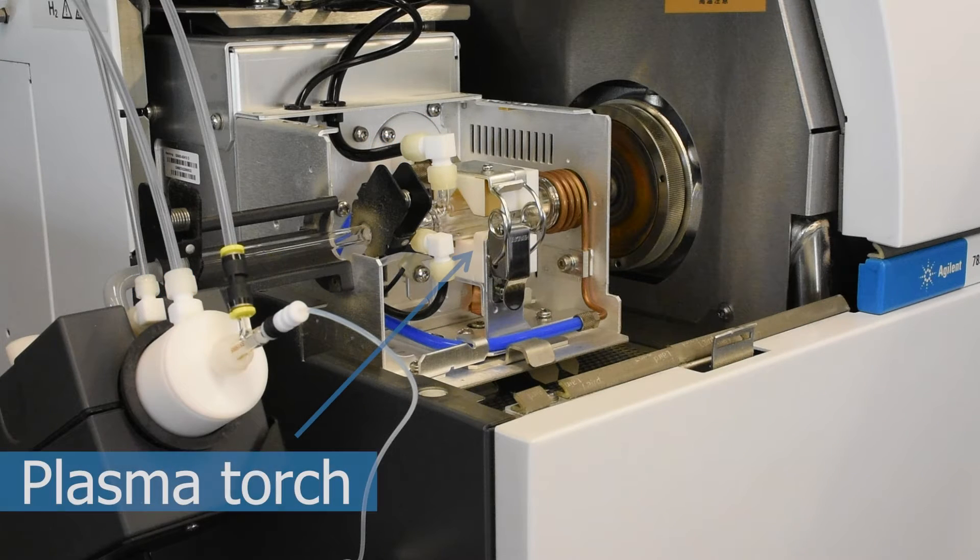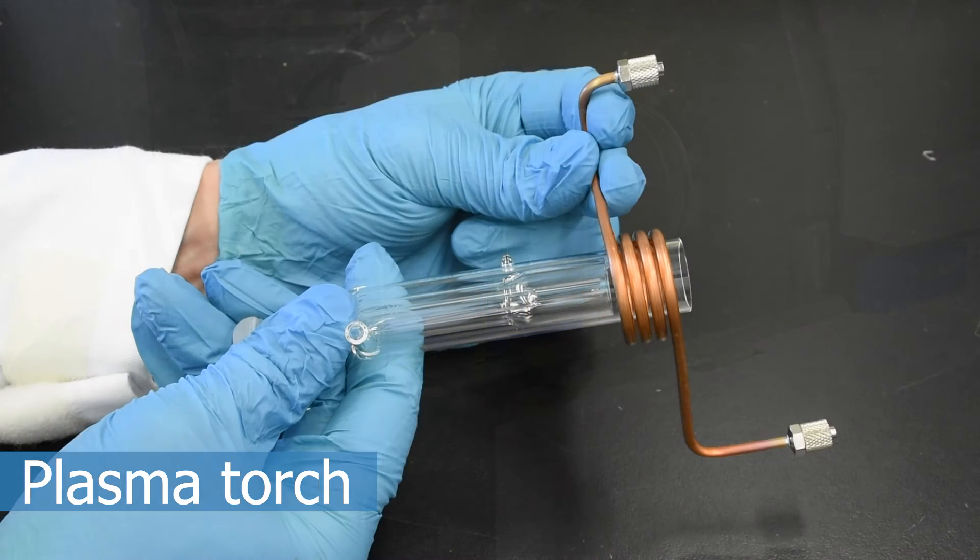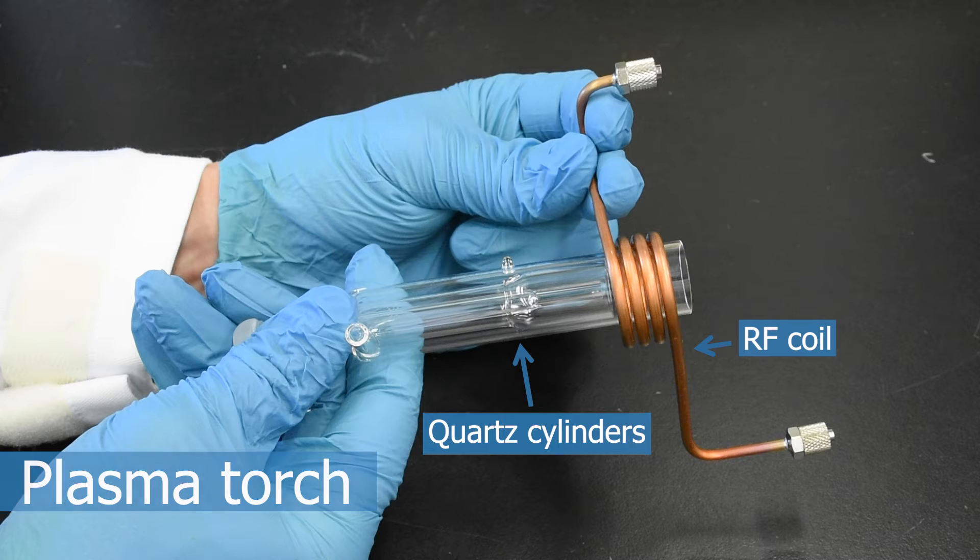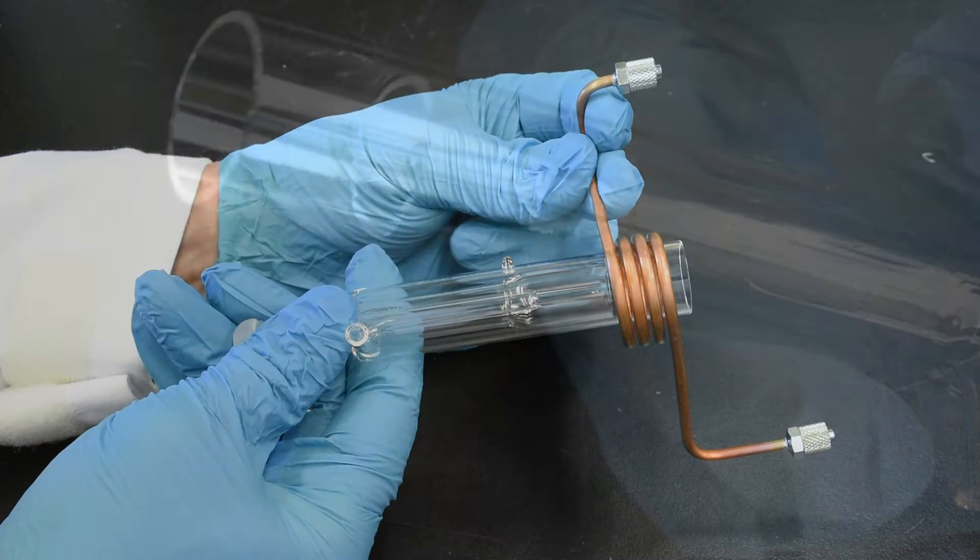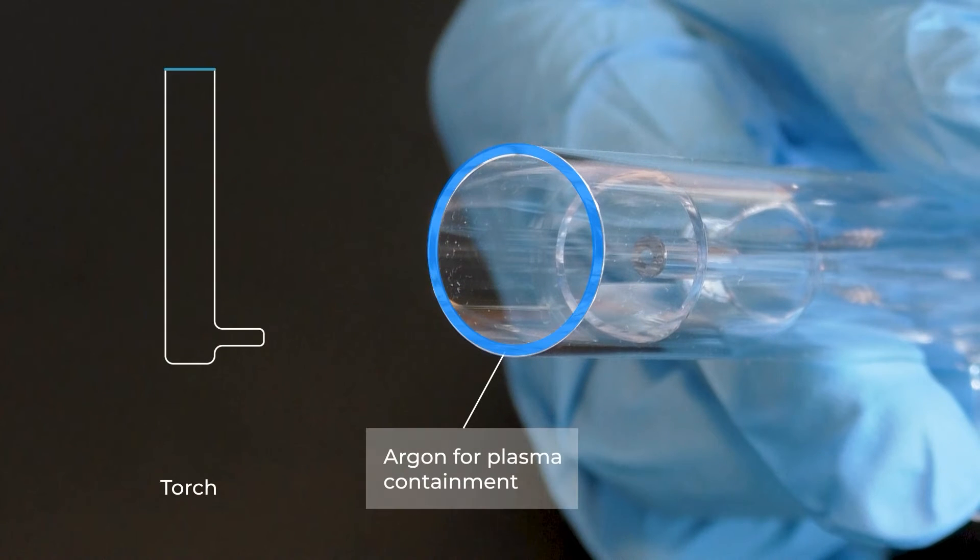The torch is composed of three concentric quartz cylinders and has a radiofrequency, or RF, coil around it. The RF coil provides the power for the plasma. A steady flow of argon spirals out from the outermost cylinder, keeping the plasma contained and preventing it from melting the torch.